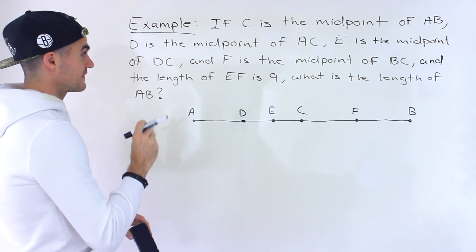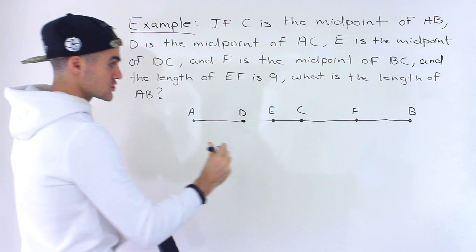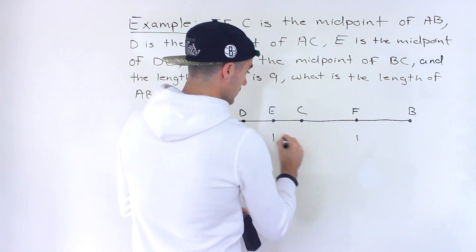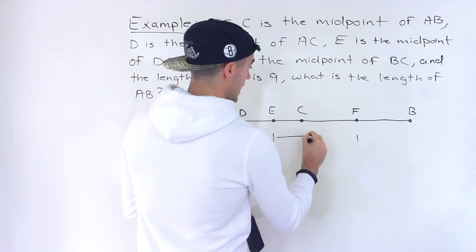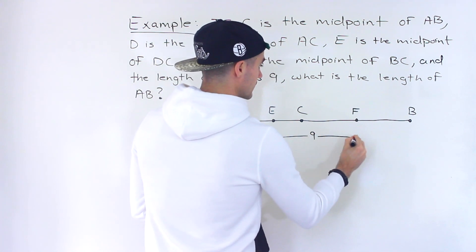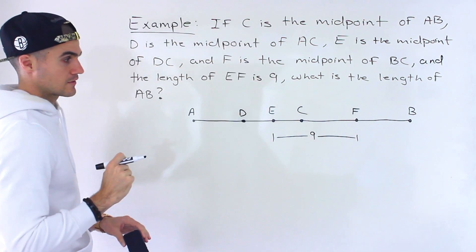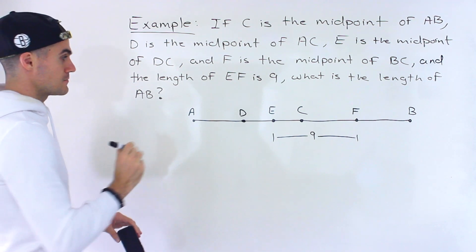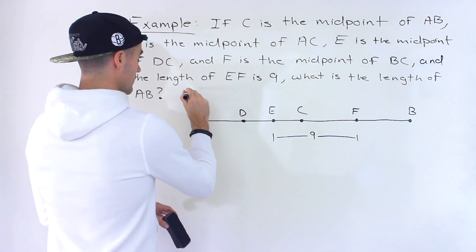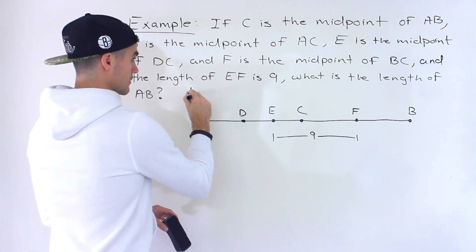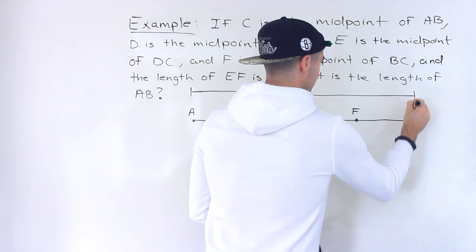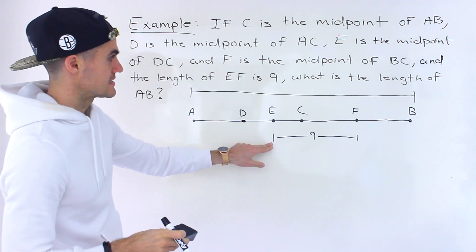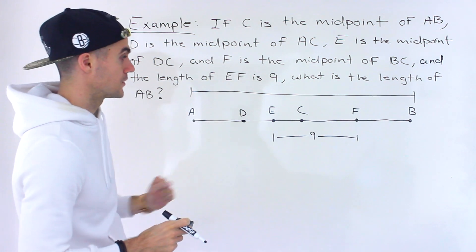We're told that the length of EF — from here to here — is nine. That's the length right there, nine units. And they're asking: what is the length of AB? So they're asking, what is this length? Given that EF is nine, what's this length going to be?